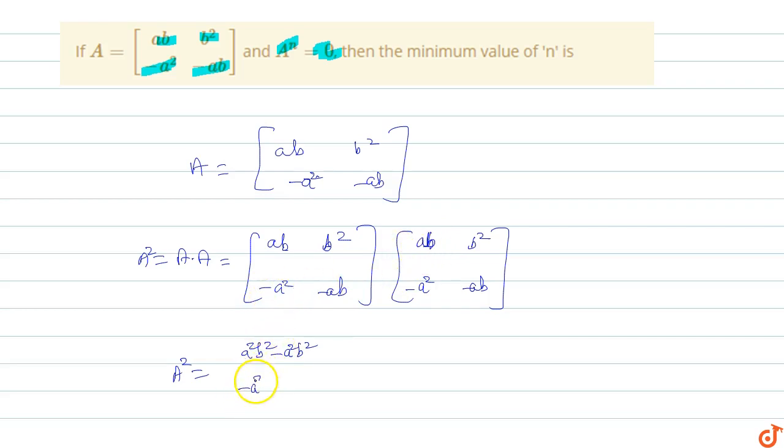Now multiply this row with this column: ab times b² is ab³, and b² times -ab equals -ab³. Next, -a² into b² equals -a²b², minus ab into -a² which is plus a³b.